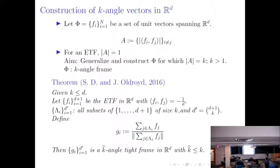In the interest of time, I will not show the proof, but the critical part is that the denominator — the norm — is independent of which subset you take, so it is constant for any i. The number of angles is obtained by a counting argument, and the fact that it is a tight frame follows from showing that the frame potential attains a certain value.